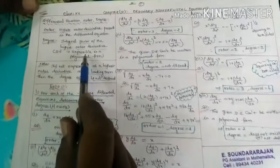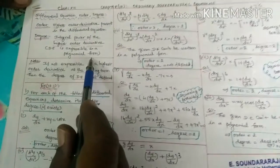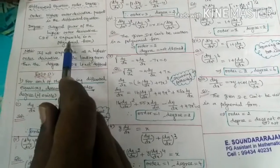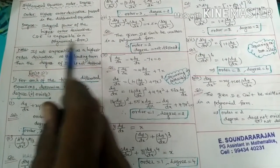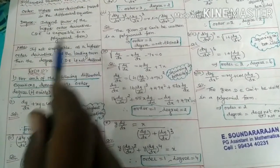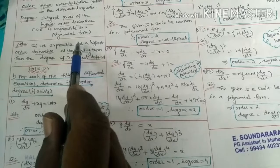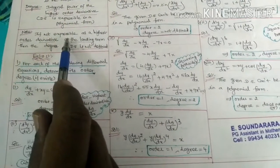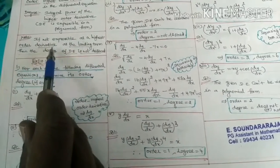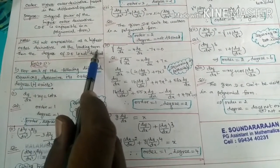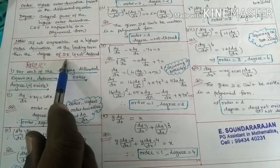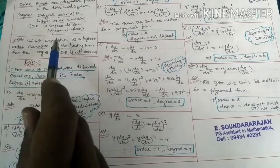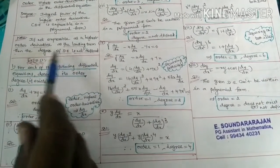Degree: the differential equation must be expressible in polynomial form. If the differential equation is expressible, we can expand it as a polynomial formula. If it is not in polynomial form, the degree of the differential equation is not defined. Note that if the equation is not expressible with the highest order derivative as the leading term, then the degree is not defined.